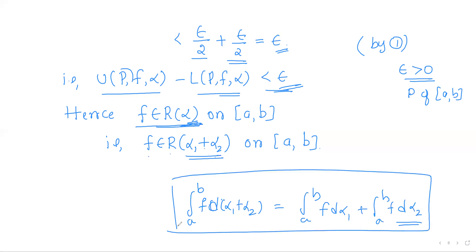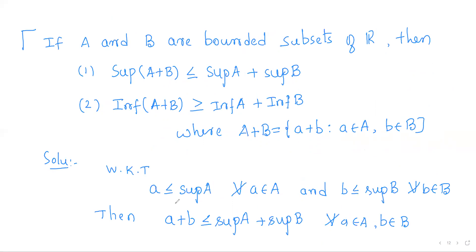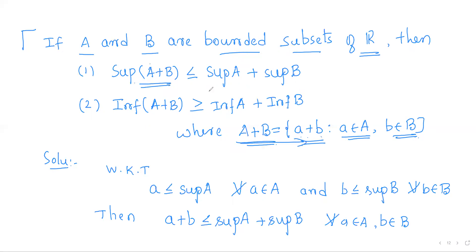To prove the integral equality, recall a basic fact about supremum and infimum. If A and B are bounded subsets of ℝ, consider the set A + B = {a + b : a ∈ A, b ∈ B}. Then sup(A + B) ≤ sup(A) + sup(B), and inf(A + B) ≥ inf(A) + inf(B).